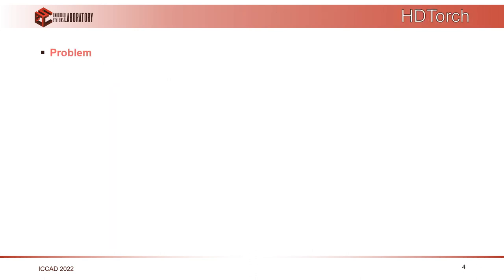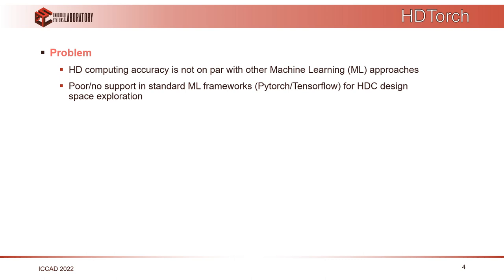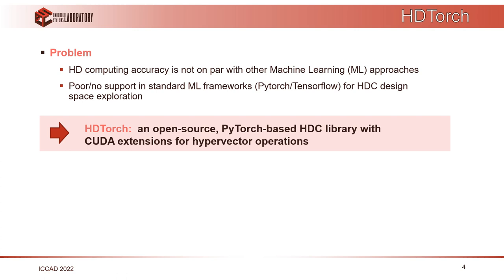The problem comes when we use HD computing on highly demanding machine learning problems, where its performance in terms of accuracy is not on par with other machine learning algorithms. Moreover, there is poor or almost no support in standard machine learning frameworks such as PyTorch or TensorFlow for designing and exploring HDC algorithms. So we worked on HDTorch, an open source PyTorch-based library which also has a CUDA extension for hypervector operations.